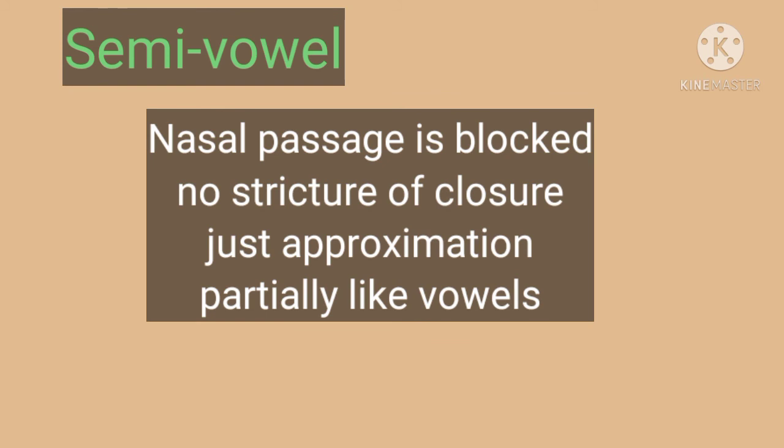In the production of semi-vowels, the nasal passage is blocked. There is no stricture of closure like other consonants — it is just an approximation. Therefore semi-vowels are partially like vowels. There are two semi-vowels in English: W and Y. W is a bilabial semi-vowel and Y is a palatal semi-vowel. Both the semi-vowels are voiced.